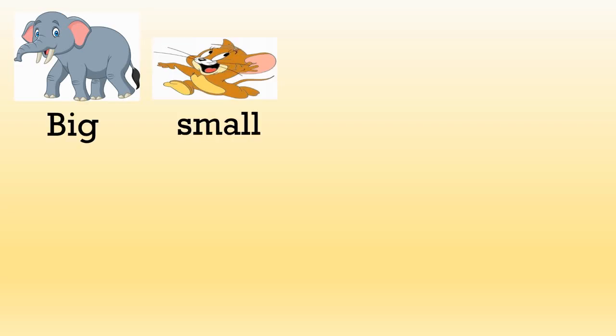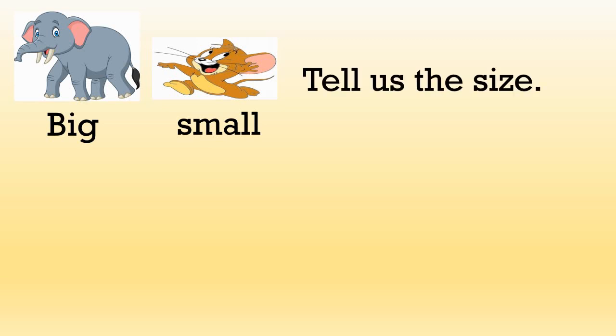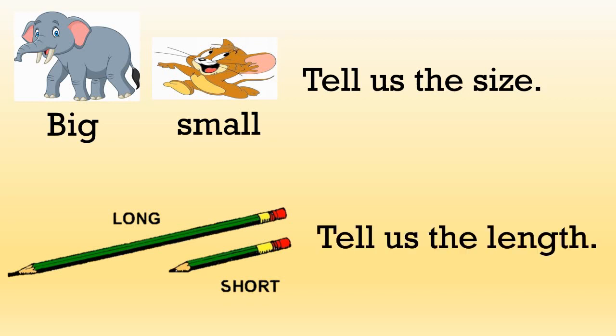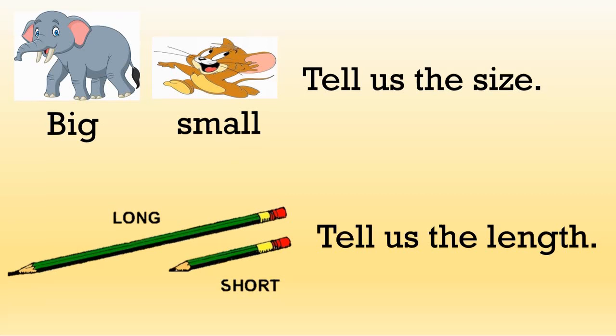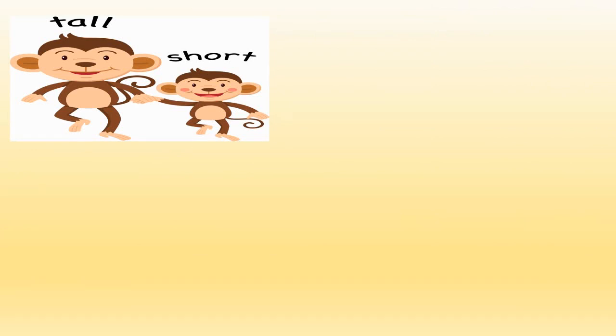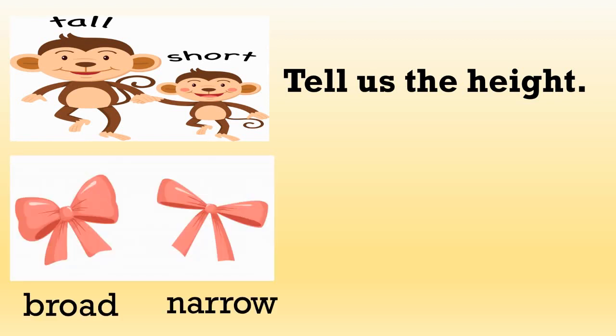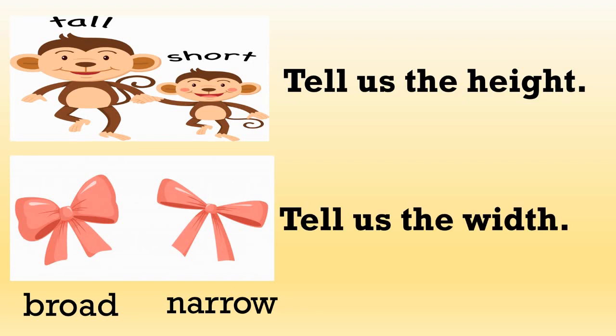Now student, I have one cute poem for you — you have to recite this poem. You can repeat after me: Big and small, big and small — tell us the size, tell us the size. Long and short, long and short — tell us the length, tell us the length. Tall and short, tall and short — tell us the height, tell us the height. Broad and narrow, broad and narrow — tell us the width, tell us the width. I hope you learn this poem and get to know what each word is used for.